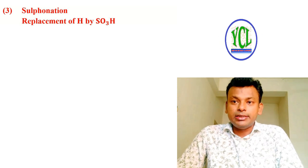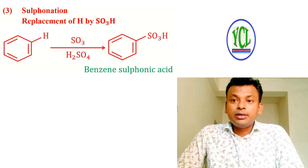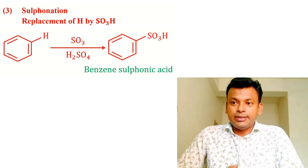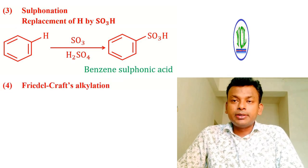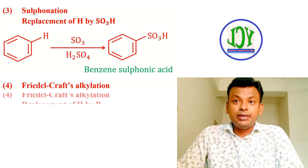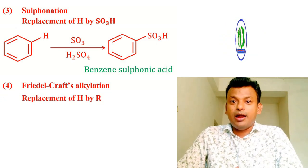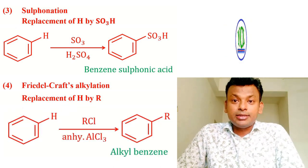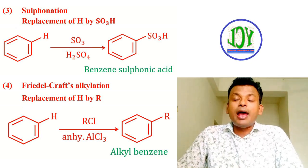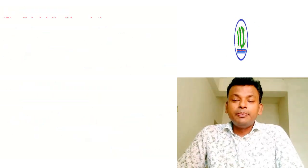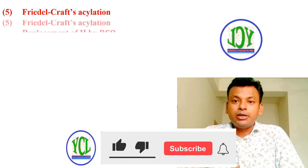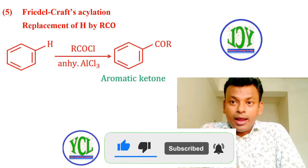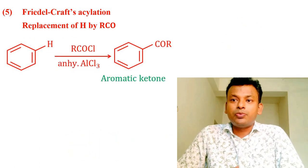Third, sulfonation: replacement of H by SO₃H, using SO₃ and concentrated H₂SO₄, forming benzene sulfonic acid. Fourth, Friedel-Crafts alkylation: replacement of hydrogen by an alkyl group R, using RCl and anhydrous AlCl₃, forming alkylbenzene. Fifth, Friedel-Crafts acylation: replacement of hydrogen by an RCO group, using RCOCl and anhydrous AlCl₃, forming an aromatic ketone.